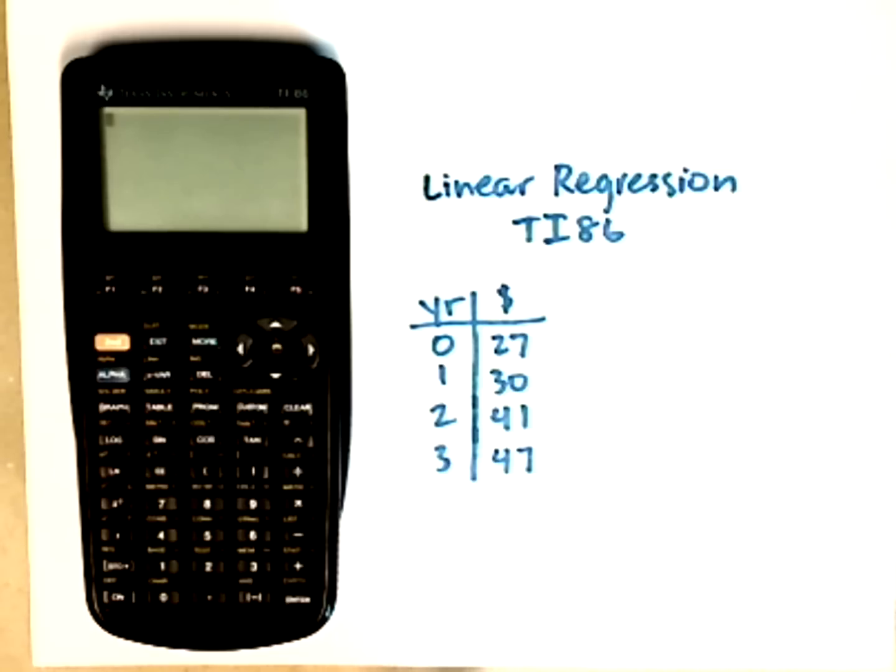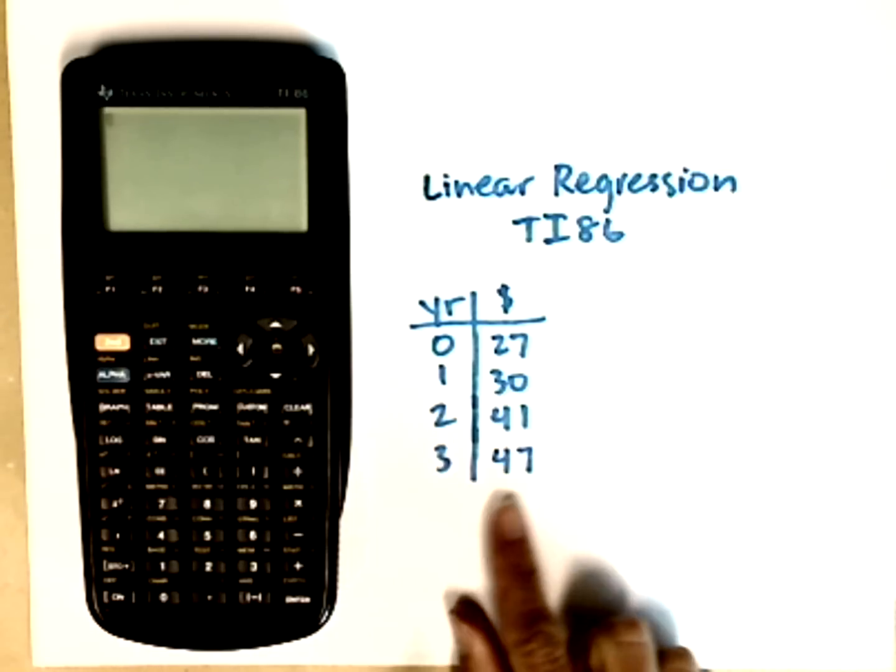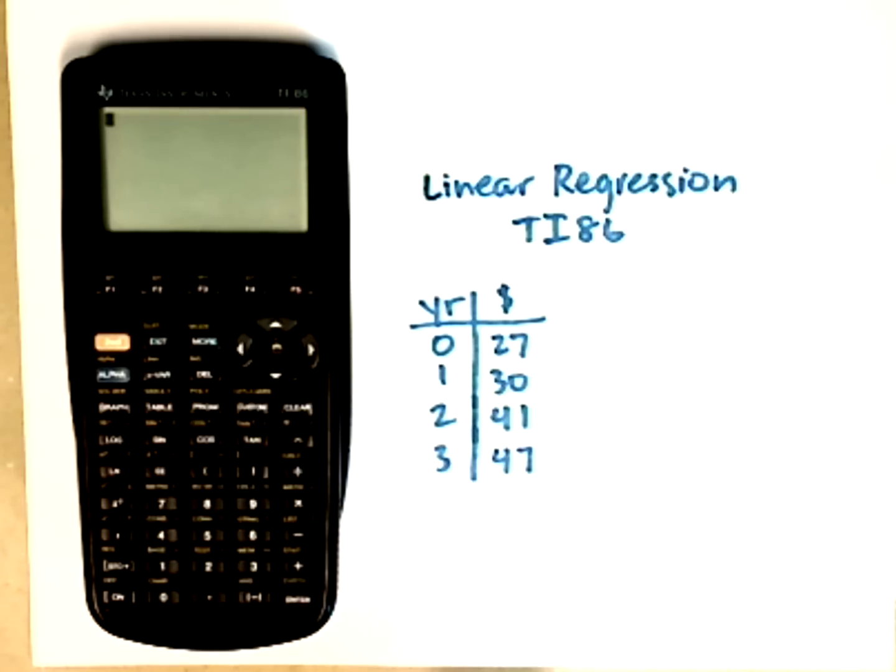In this video, we're going to find a linear regression for the data that represents year, and we can call this the amount of money that you can sell your book back for, in year 0, 1, 2, and 3.